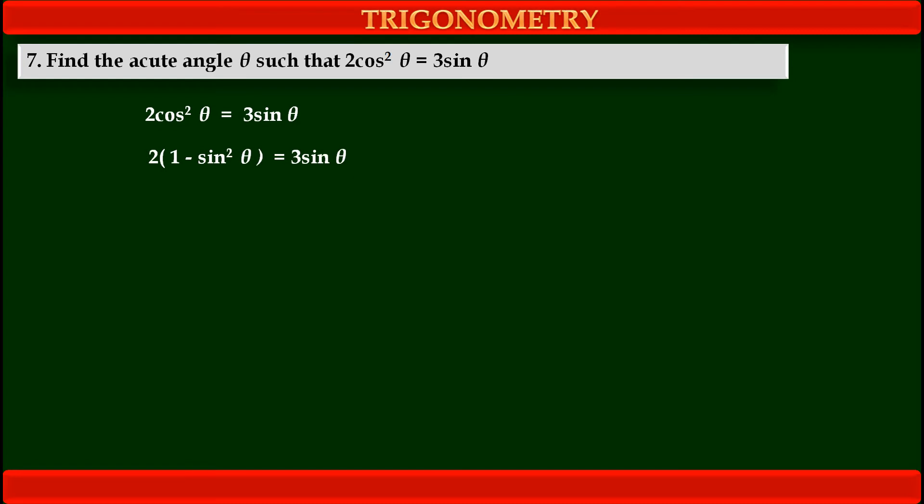Cos²θ in sin²θ. See how. Our first term becomes 2 times, at the place of cos²θ, we have to use identity 1 - sin²θ is equal to, in the right hand side, 3sinθ as it is.